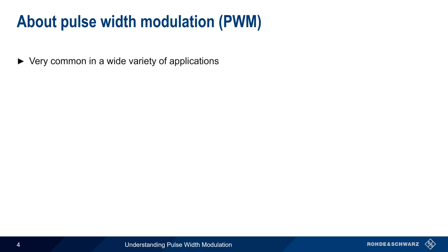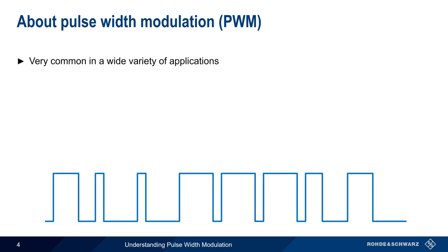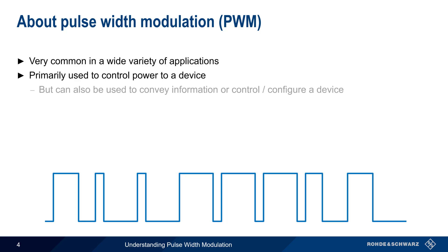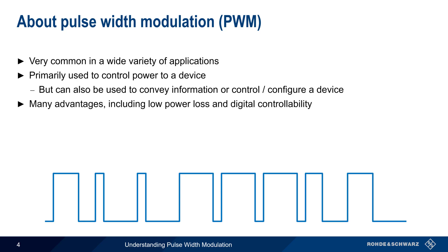Pulse width modulation is very common in a wide variety of applications. It's primarily used to control the amount of power delivered to a device, but in some cases it can be used to convey information, or to control and configure a device. Pulse width modulation has many advantages, including low power loss compared to variable resistances, as well as the ability to be controlled digitally or programmatically.